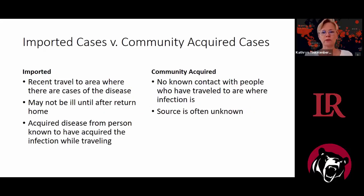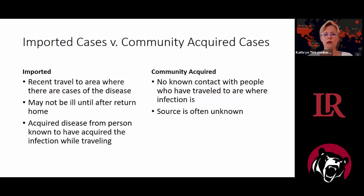Imported cases versus community acquired cases relates to how the disease is spreading. An imported case means the person who was sick actually got the disease somewhere else — they traveled, picked up the microorganism, and either got sick there or after they got home. For example, every year there are a couple cases of cholera in the United States, and they are always imported because we have good sanitation.